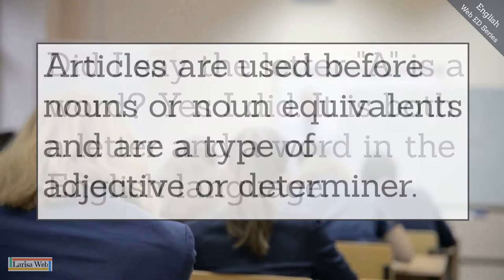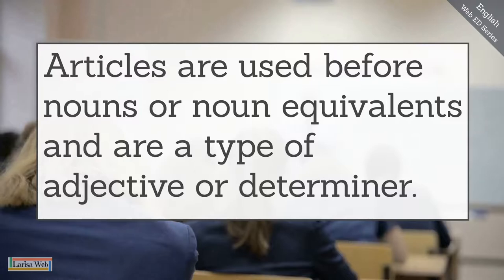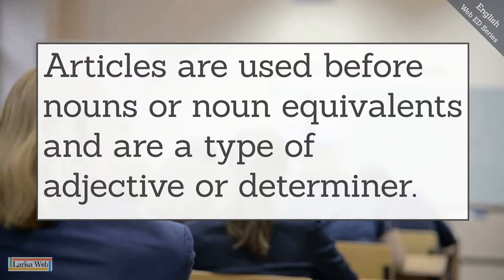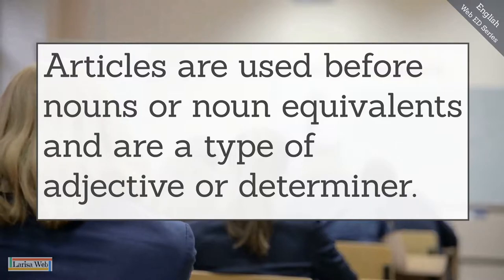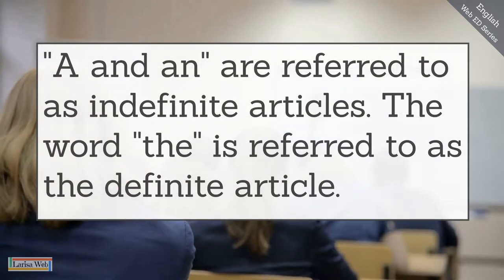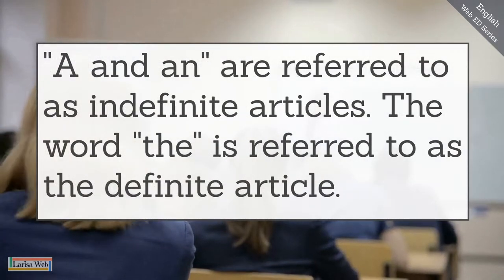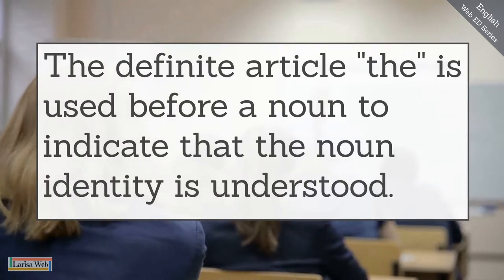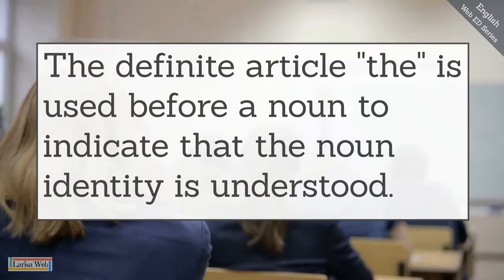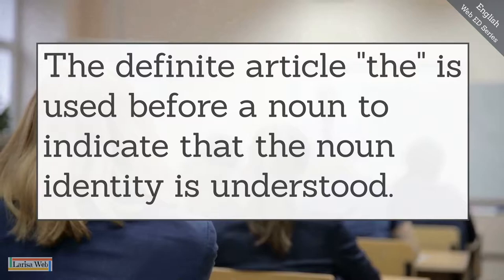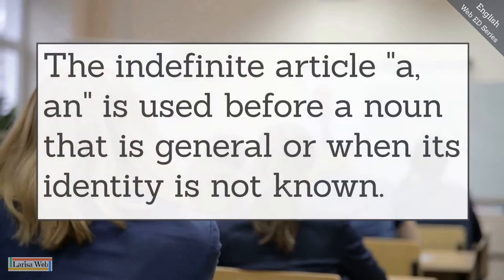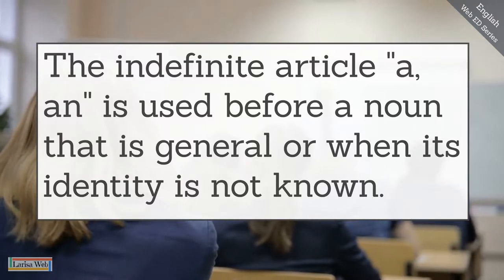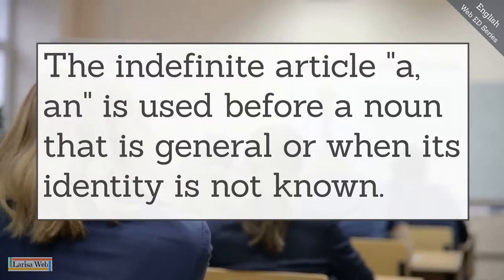Articles are used before nouns or noun equivalents and are a type of adjective or determiner. A and an are referred to as indefinite articles. The word the is referred to as the definite article. The definite article the is used before a noun to indicate that the noun identity is understood. The indefinite article a and an is used before a noun that's general or when its identity is not known.